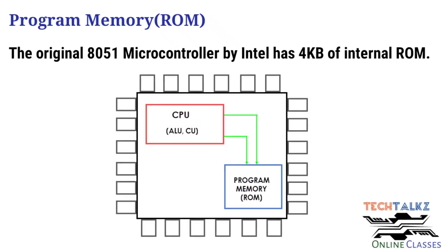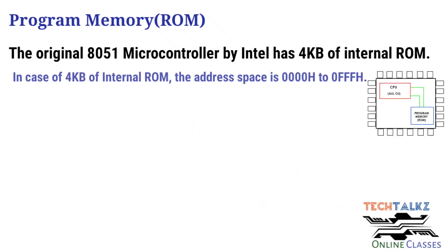Program memory, that is ROM, in detail: the original 8051 version has 4KB of ROM available. The ROM address space is from 0000 hex to 0FFF hex.